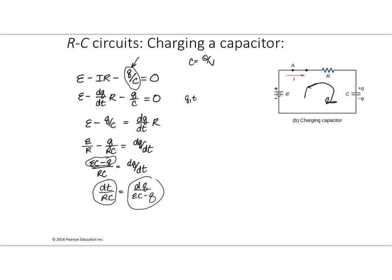I'm going to do one more thing: I'm going to multiply both sides by negative one. What this is going to do is make it a lot easier to integrate both sides, because the right-hand side will have the form du over u. The left-hand side is pretty easy to integrate. On the right-hand side, I'm integrating over charge; the charge starts at 0 and goes to some value I'll call q. I started at time 0 and go to some time t. We're going to integrate both of these expressions.